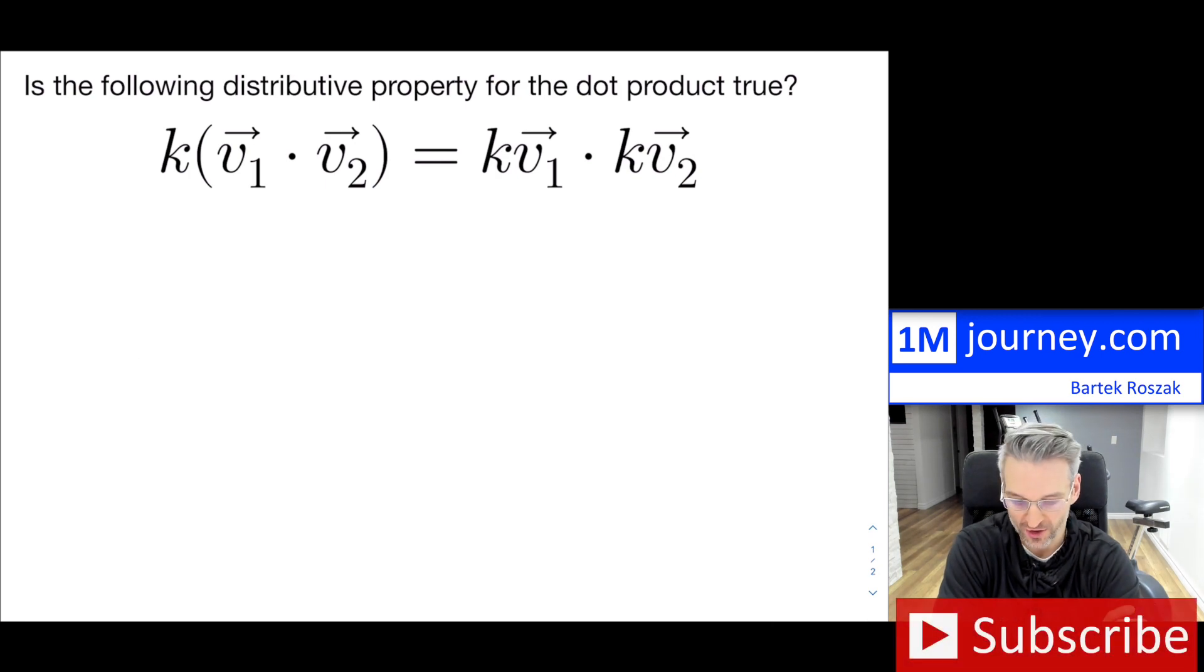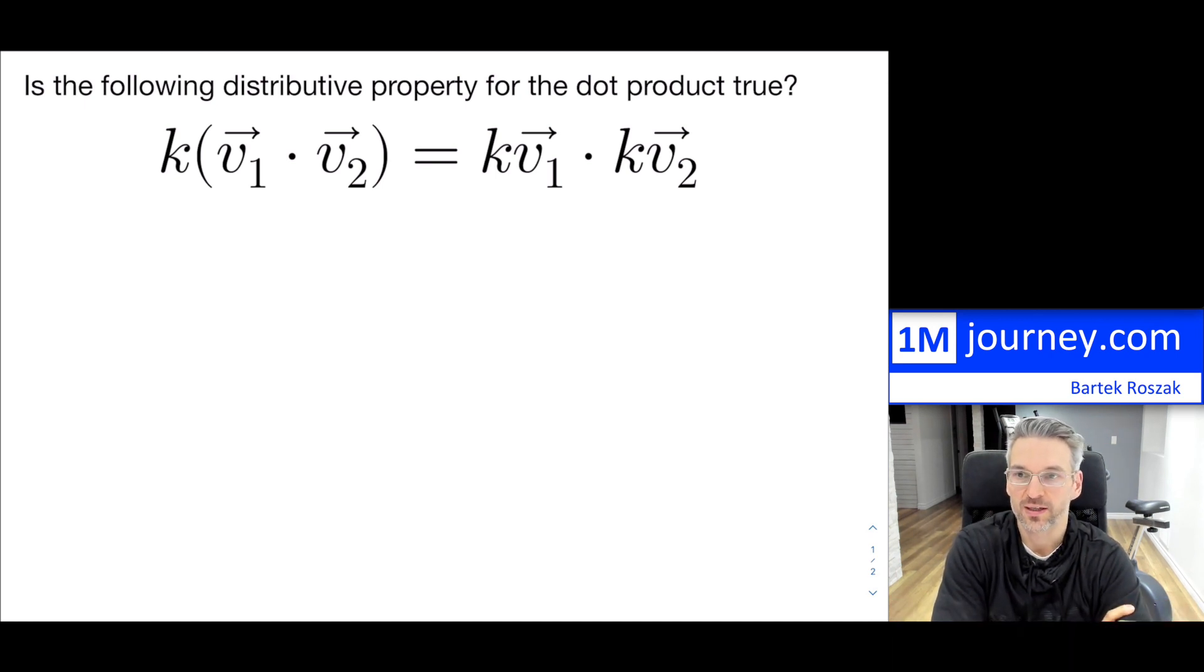So even if you are just starting off learning about vectors, so this would have been a grade 12 kind of calculus and vectors question. It asks us, is the following distributive property for the dot product true?